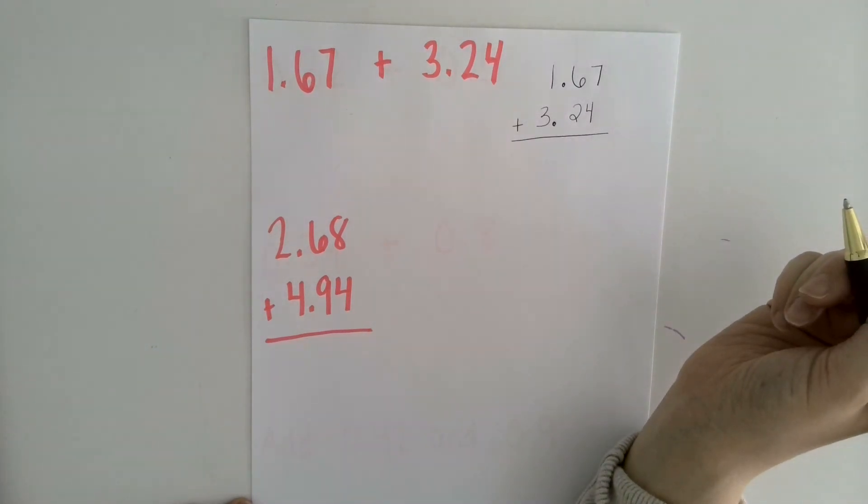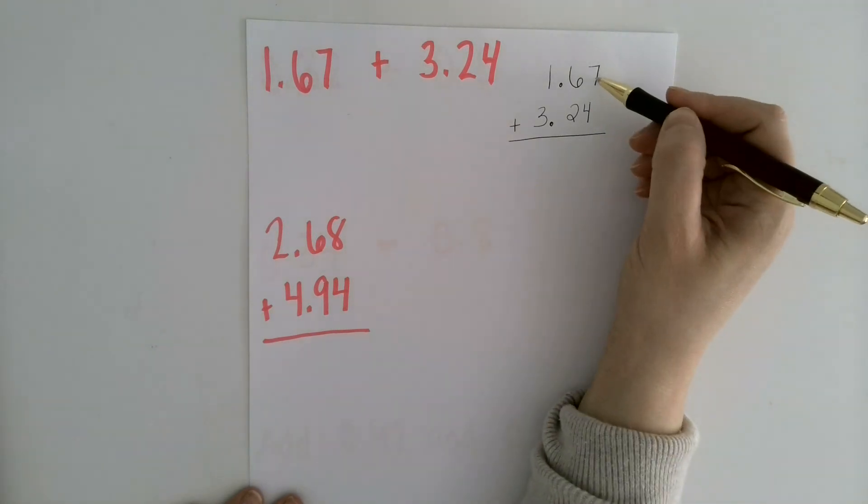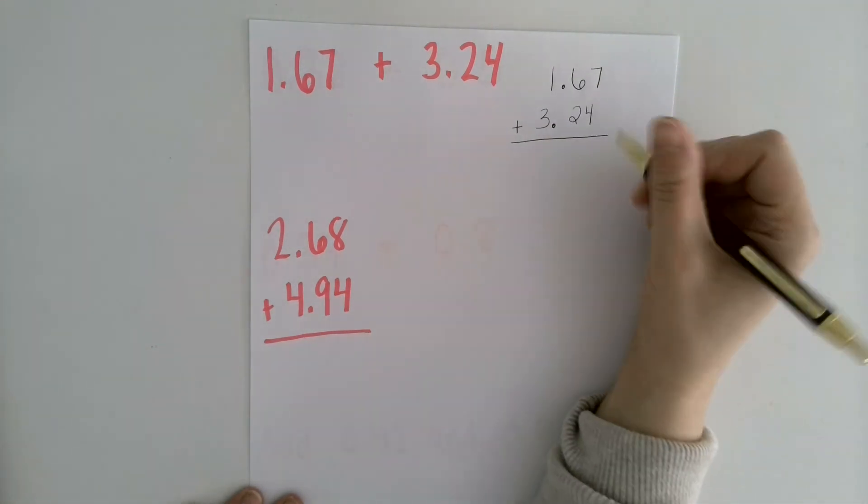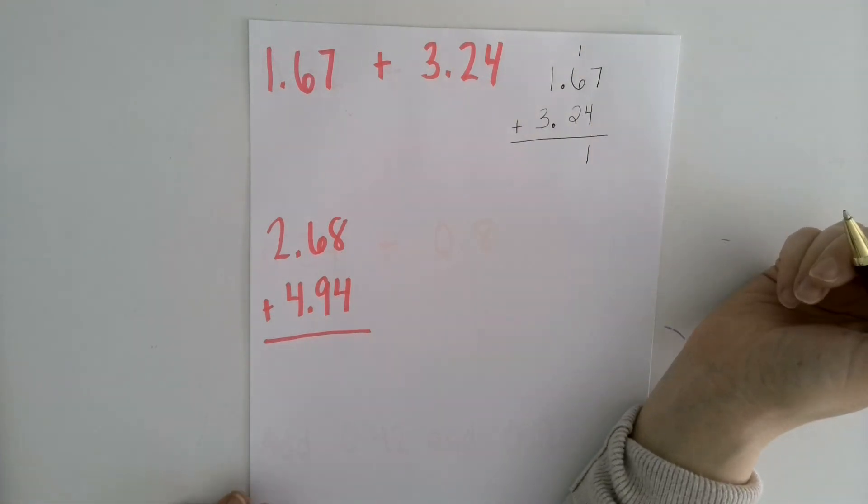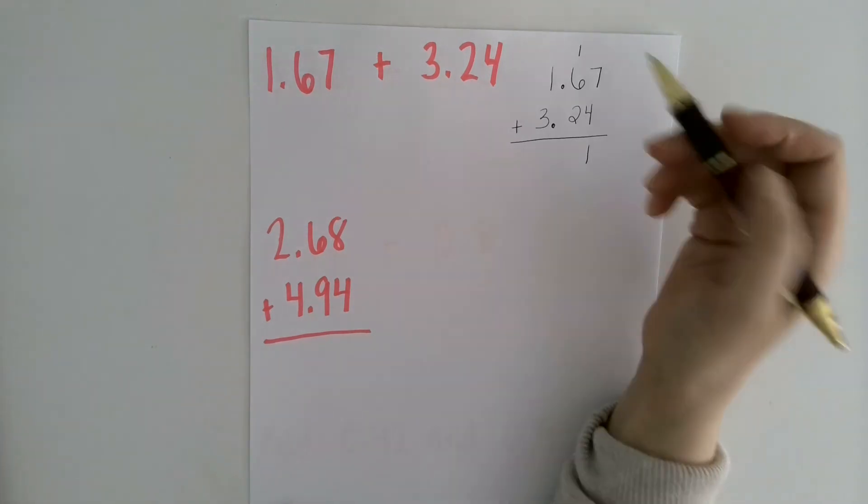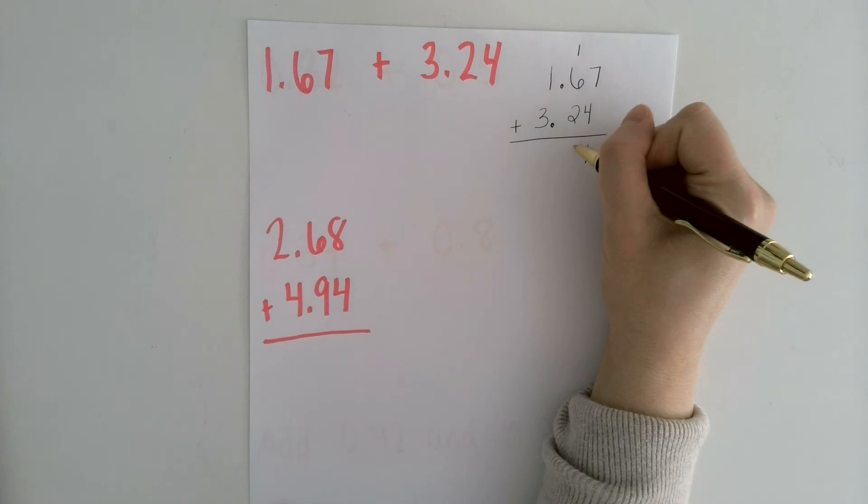adding them is just like adding numbers that aren't decimals and I'll show you what I mean by that. So 7 plus 4 is 11. So I put the 1 down here and I regroup the other one into the 10th place just like I would if I was adding numbers that weren't decimals. So 6 plus 2 is 8 and we have one more up here so that makes it 9.